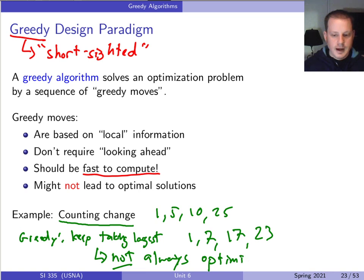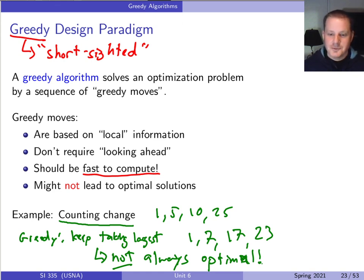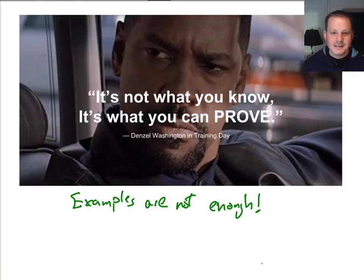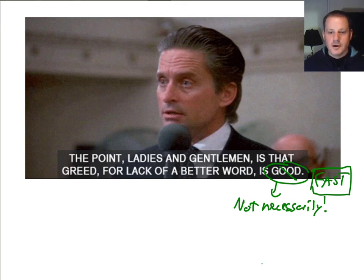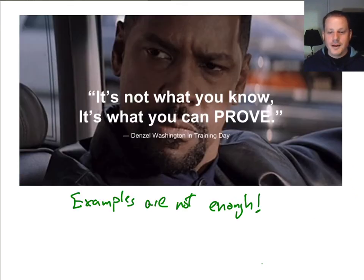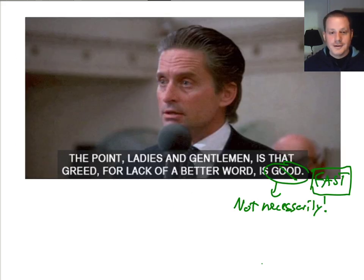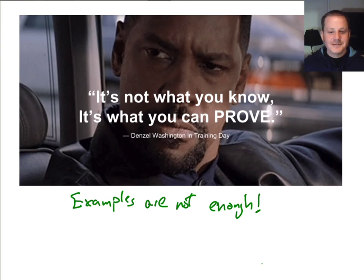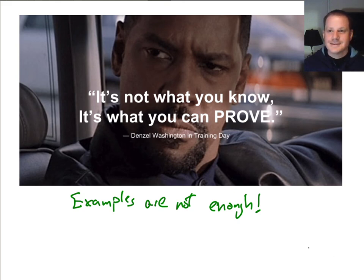So we need to be skeptical of ourselves when coming up with greedy solutions. We have to constantly ask: can I actually prove this always gives the optimal result? I won't prove Prim's algorithm is correct today — that's for the next video. And just as a reminder that we can be wrong: I thought both movie quotes were from 90s films, but Wall Street is from 1987 and Training Day is from 2001. So trust the proof, not your intuition. Listen to Denzel, not Michael Douglas.